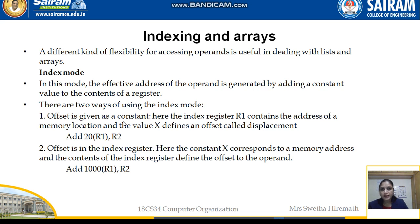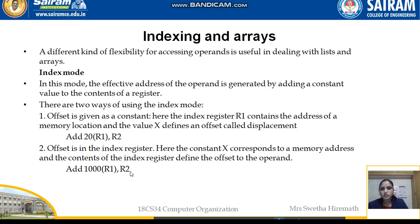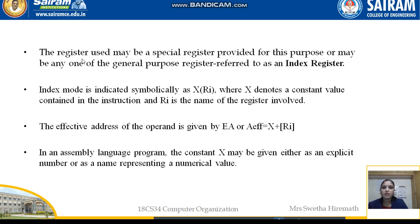In the second type of index mode, the offset is stored in the index register itself. The memory location is given directly, and the offset value in the index register is added to it. The fetched value is then added to register R2 and the result stored in R2. In the next video I will explain how the effective address is calculated.